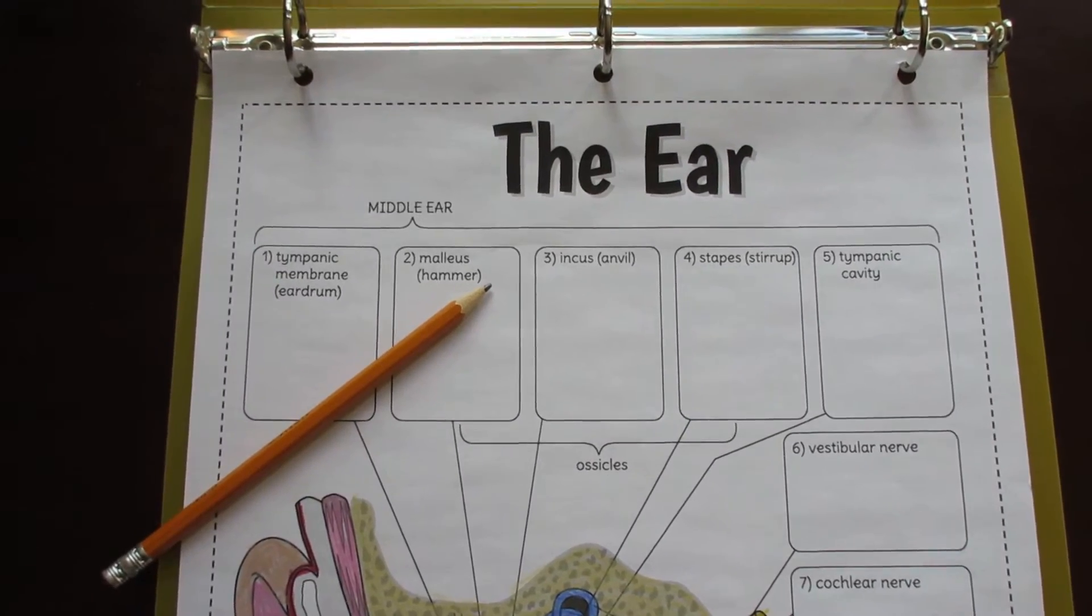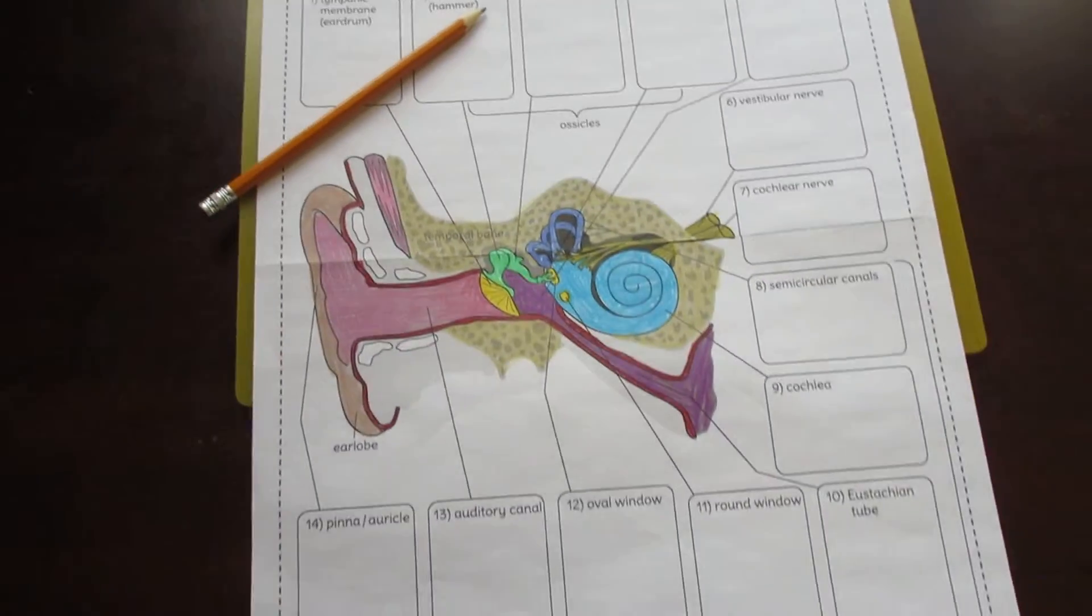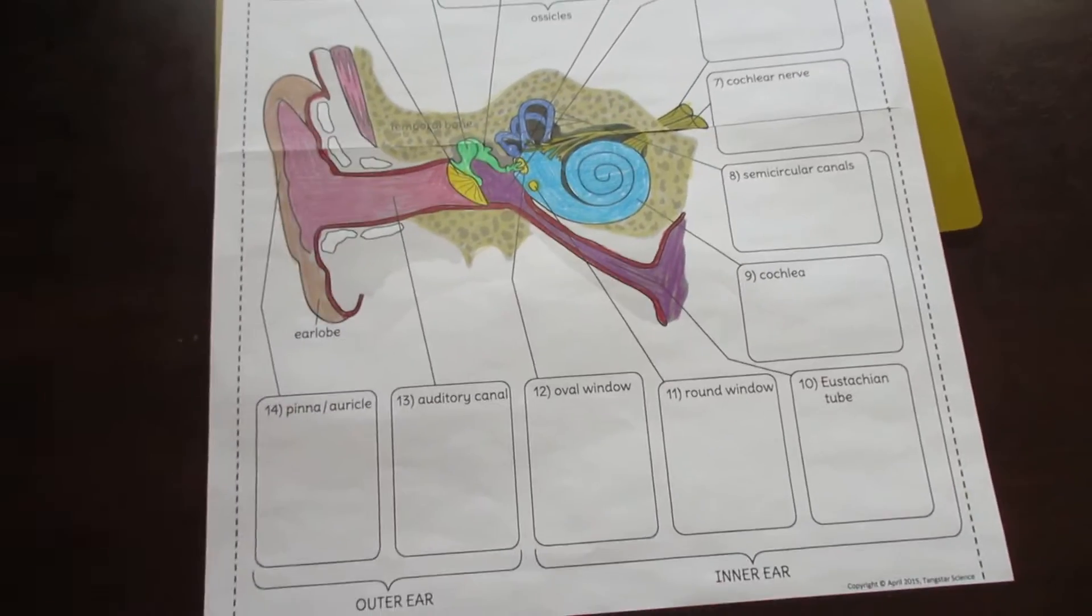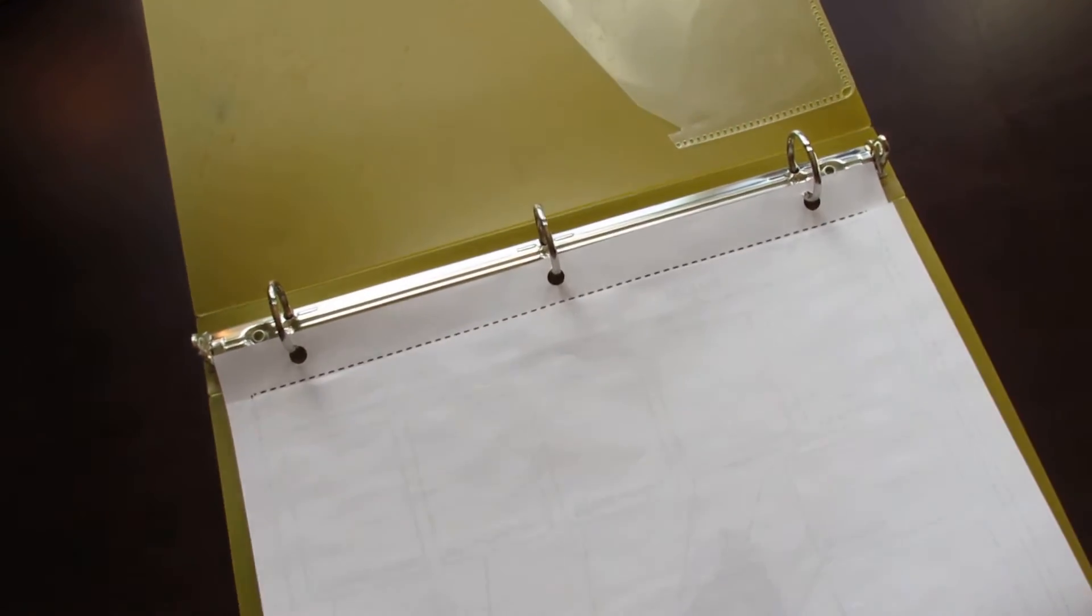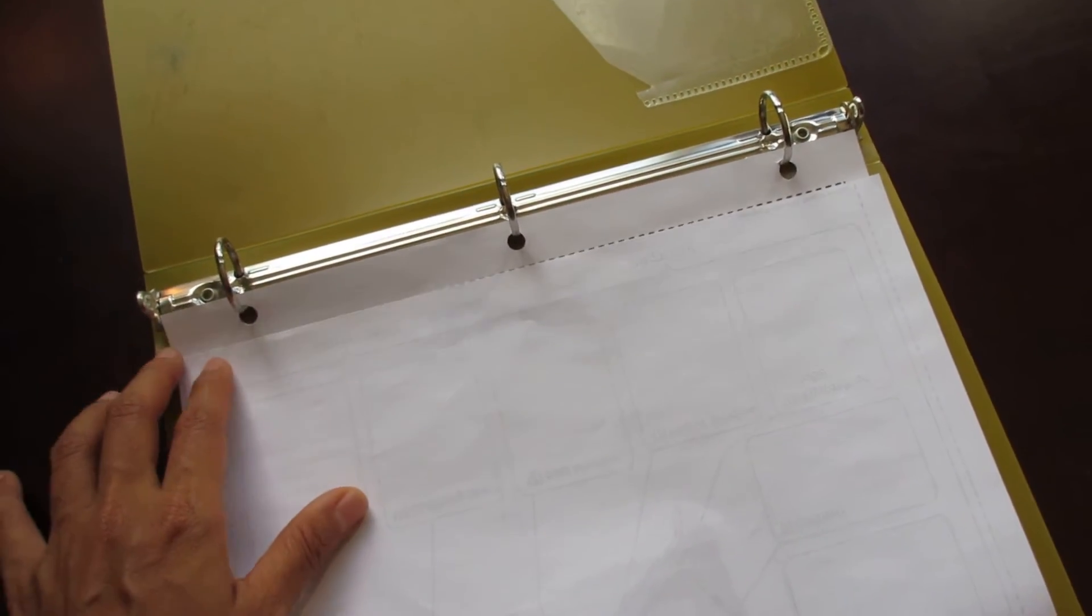This is the Tang Star Science Big Ear Foldable. It's composed of two pieces of paper which, when cut along the edges and taped together, form a nice foldable that fits neatly into a binder without overlapping the binder rings.